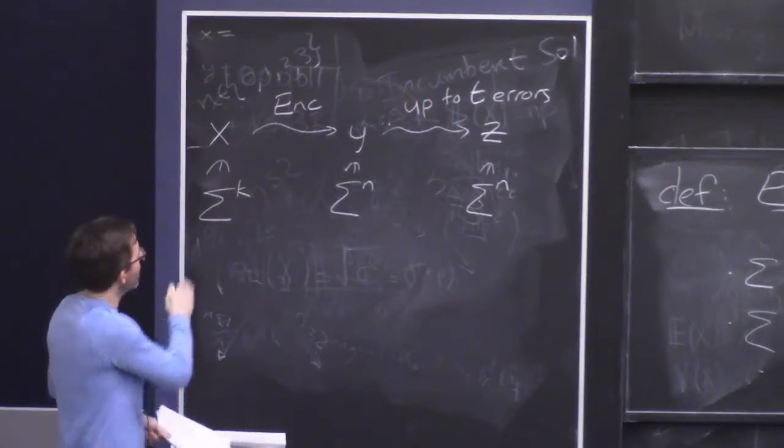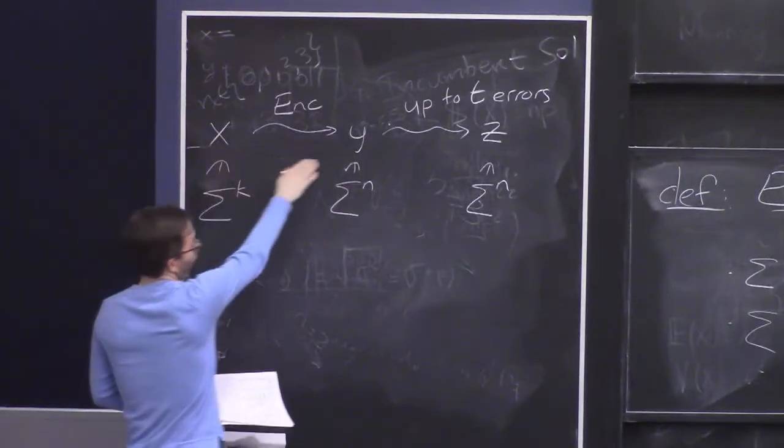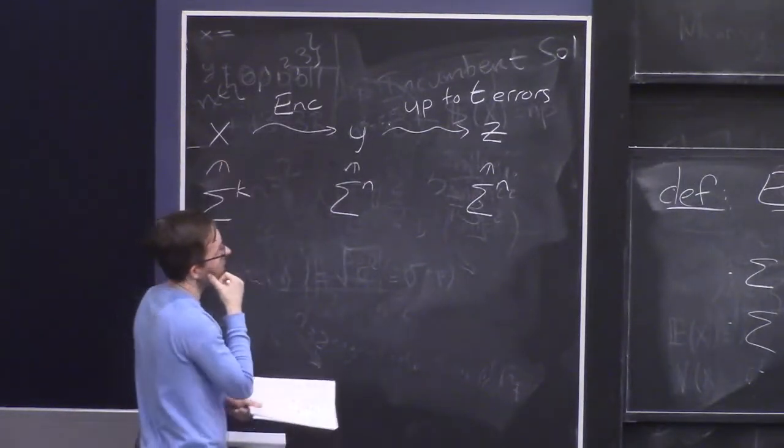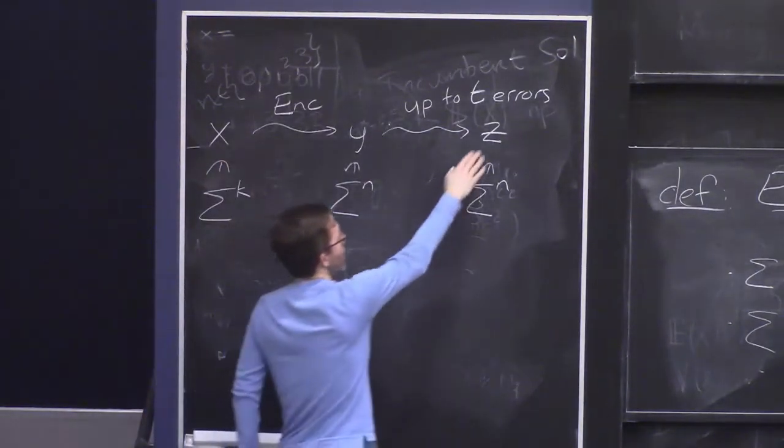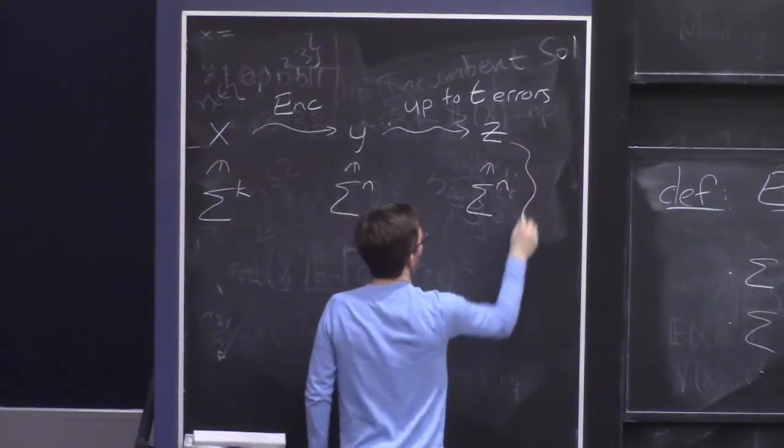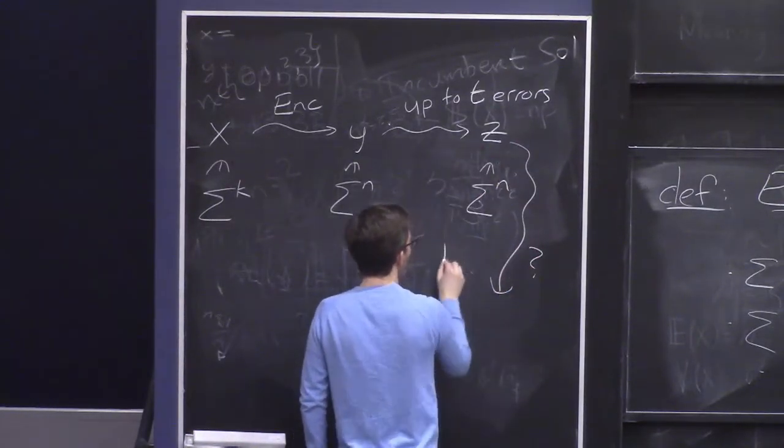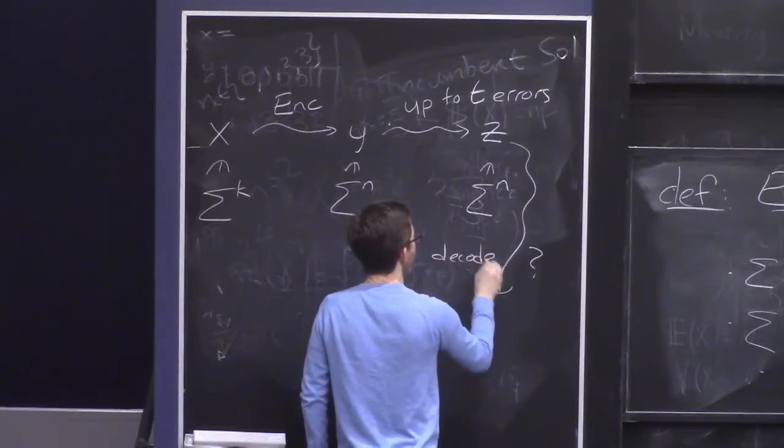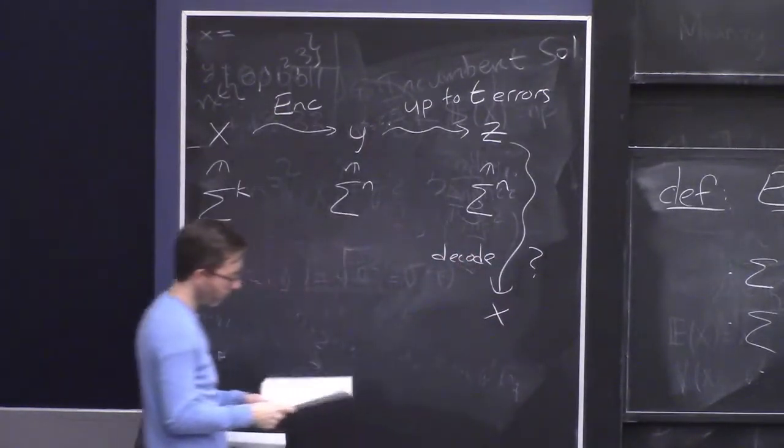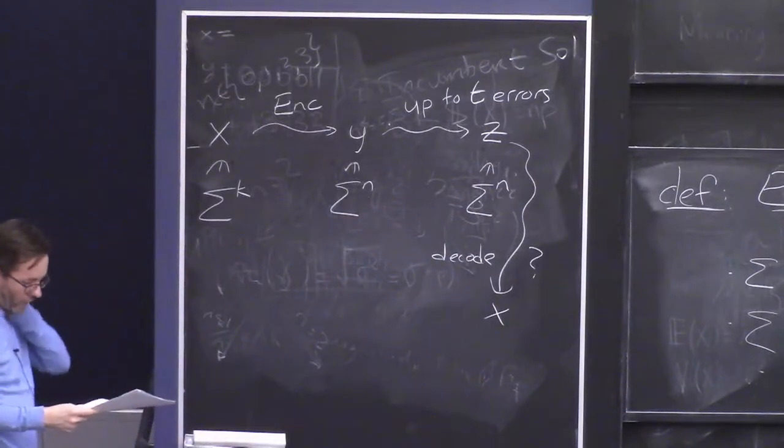And now, what you imagine, this is the transmitter transmits Y, the encoding of X, the message the transmitter wants to send. The receiver gets Z, and now somehow, we want to decode, ideally, this Z and get back X again.